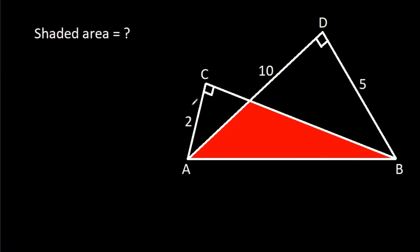In this video, we have been given that AC is 2, BD is 5, AD is 10, angle ACB is 90 degrees, angle ADB is 90 degrees. Then we have to find the shaded area.